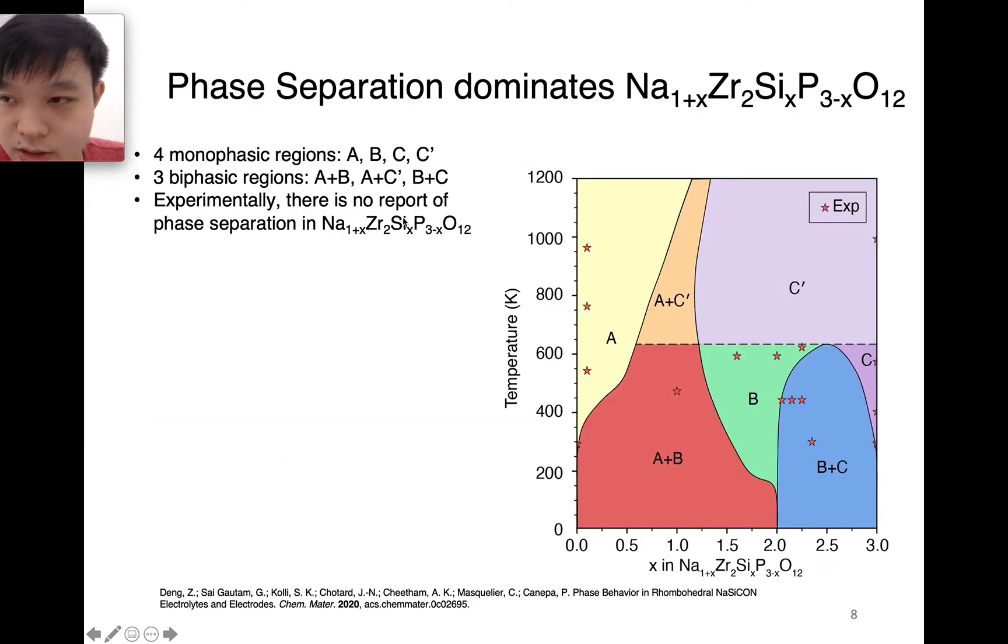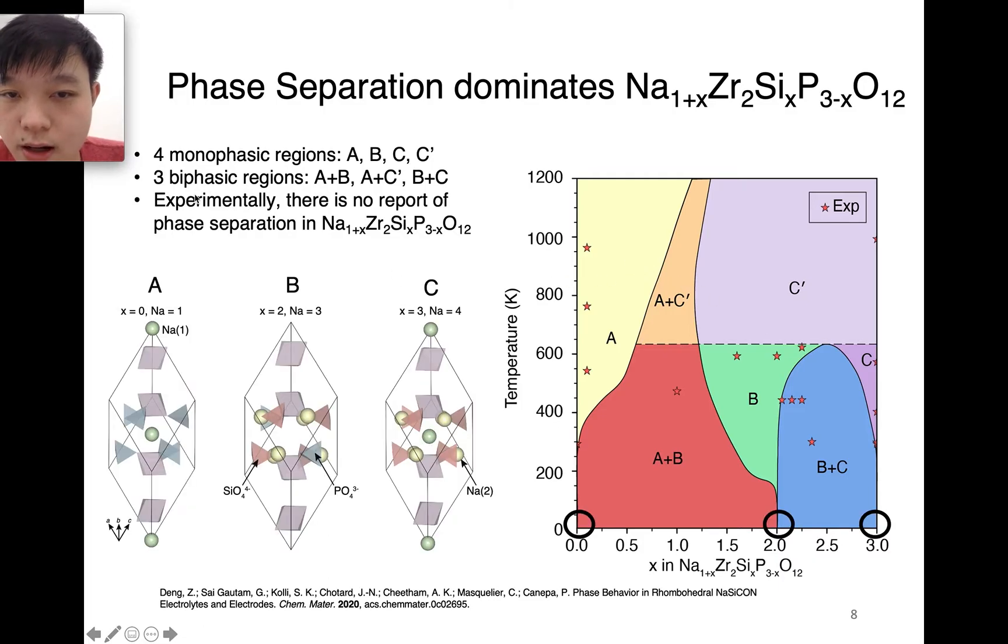After we have that knowledge, we can run Monte Carlo and get this type of phase diagram as a function of temperature and composition. We can see there are three monophasic regions A, B, and C, but also at higher temperature there's another one called C prime, which is a disordered phase merged between phase B and phase C. There are also three biphasic regions: A plus B, A plus C prime, and B plus C. However, those phase separation regions are not reported experimentally before, and I will explain it later.